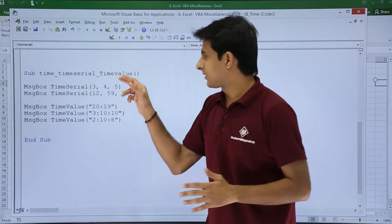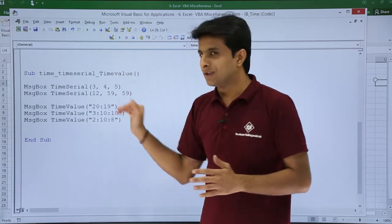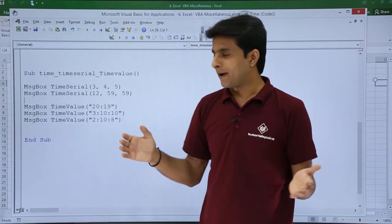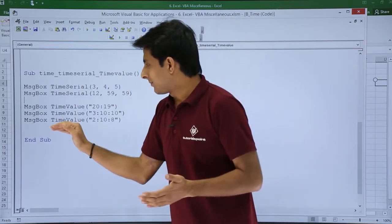Similarly, if you see 12, 59, 59, I have just copy-pasted that and changed the values so it will give me in a proper format. That is one method.